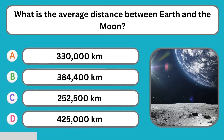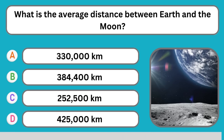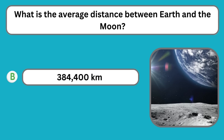What is the average distance between Earth and the moon? 3,84,400 km.